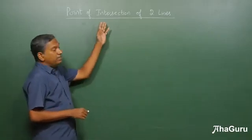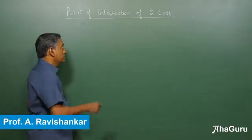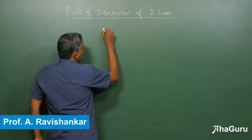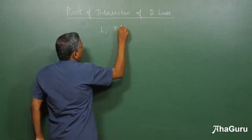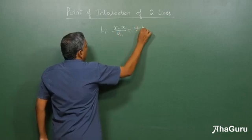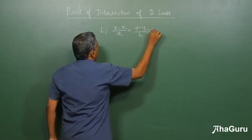Let's look at how to find the point of intersection of two lines. So let's say the two lines are given by L1 which is x minus x1 by a1, y minus y1 by b1.